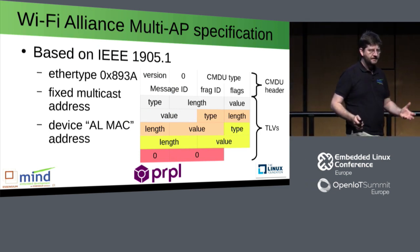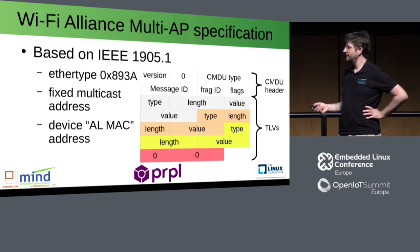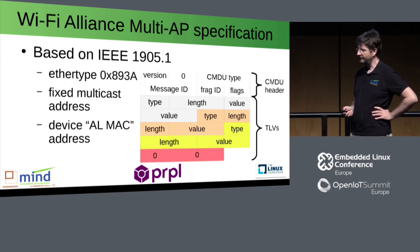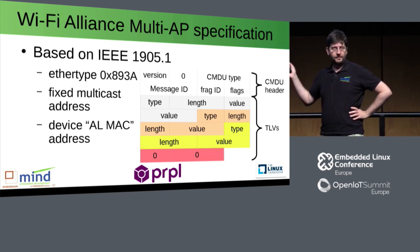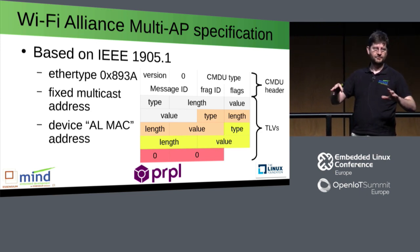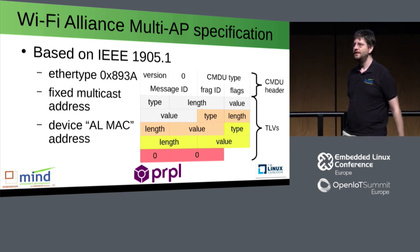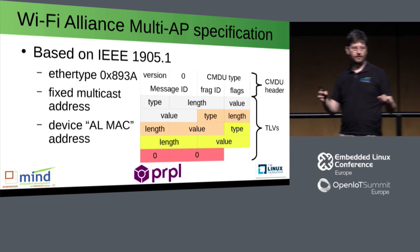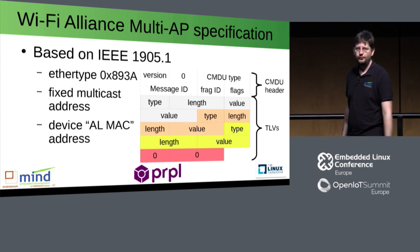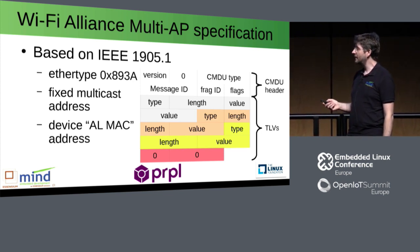A little bit of insight into how this Wi-Fi multi-AP standard works. It is based on an existing IEEE standard, 1905.1, which I had never heard about before. It's something used to allow different routers or bridges in a network — typically a wired network — to discover each other, to discover the topology, which can then be used to optimize the usage of the network. It's a bit like STP on steroids to discover how to route your packets.